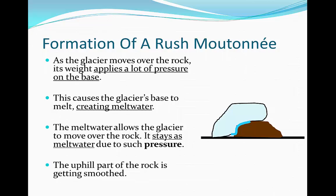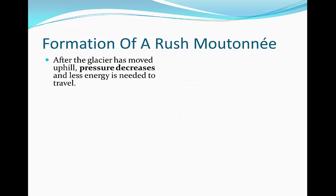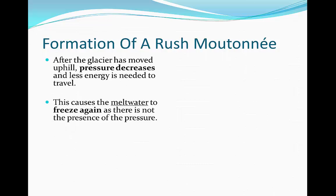After the glacier has moved uphill, the pressure decreases because it doesn't have to exert as much weight on the base — it's now moving downhill. This causes the meltwater to freeze again, because there's not much pressure, and as a result it doesn't form meltwater.